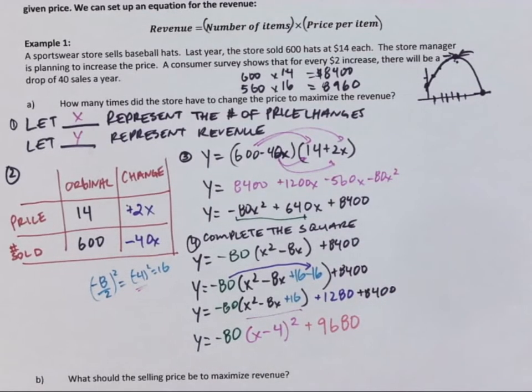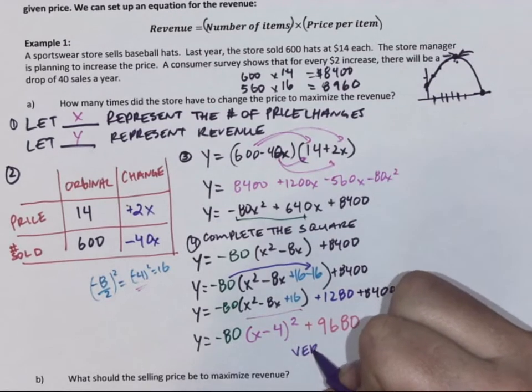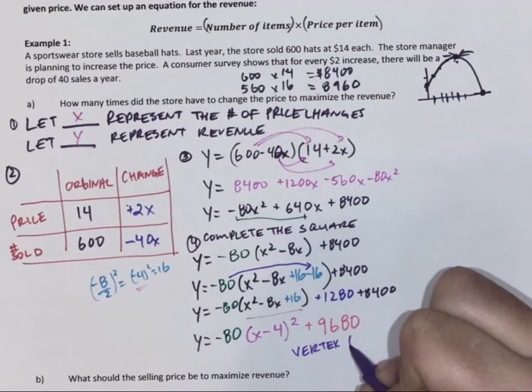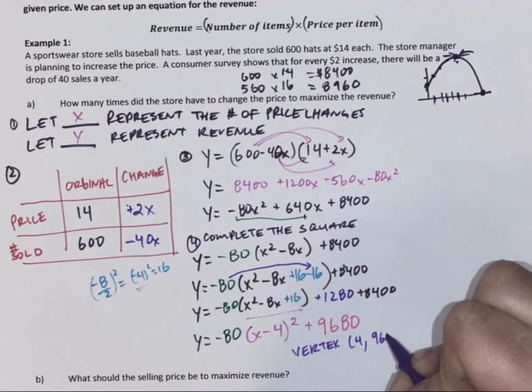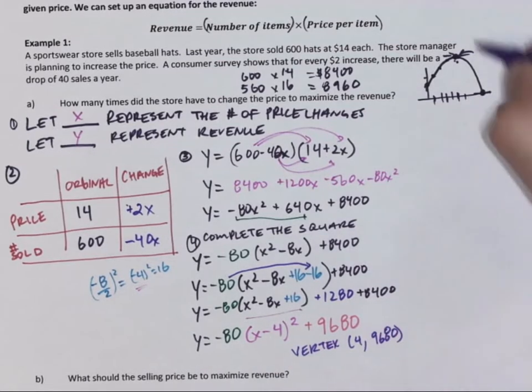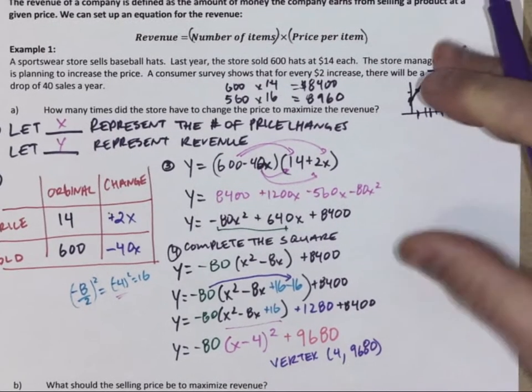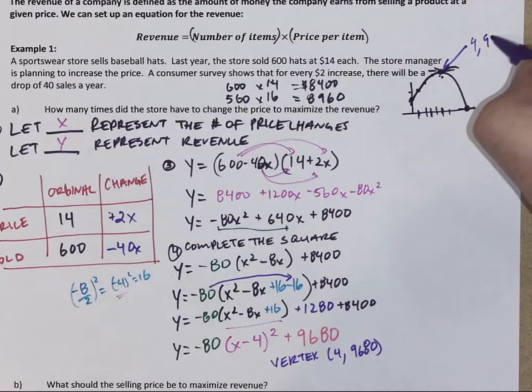And when we add that together, so that tells us. And what does that tell us? Why do we do that? Great question. That tells us the vertex. And our vertex from there is four, nine, six, eight oh. So that point right there is (4, 9680).